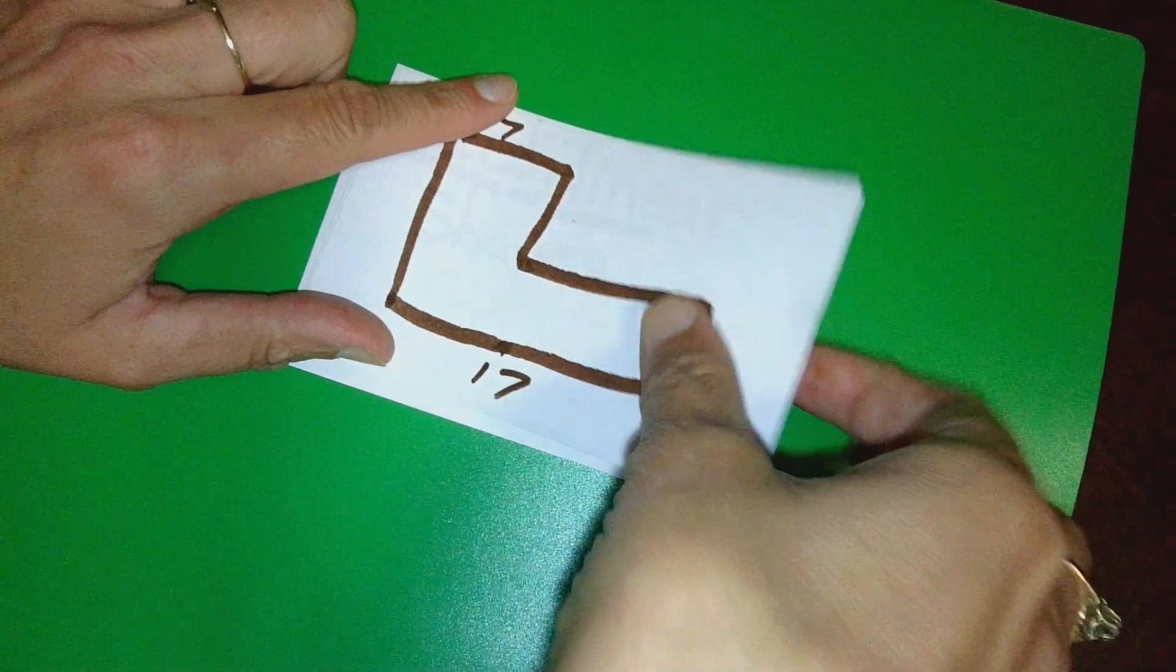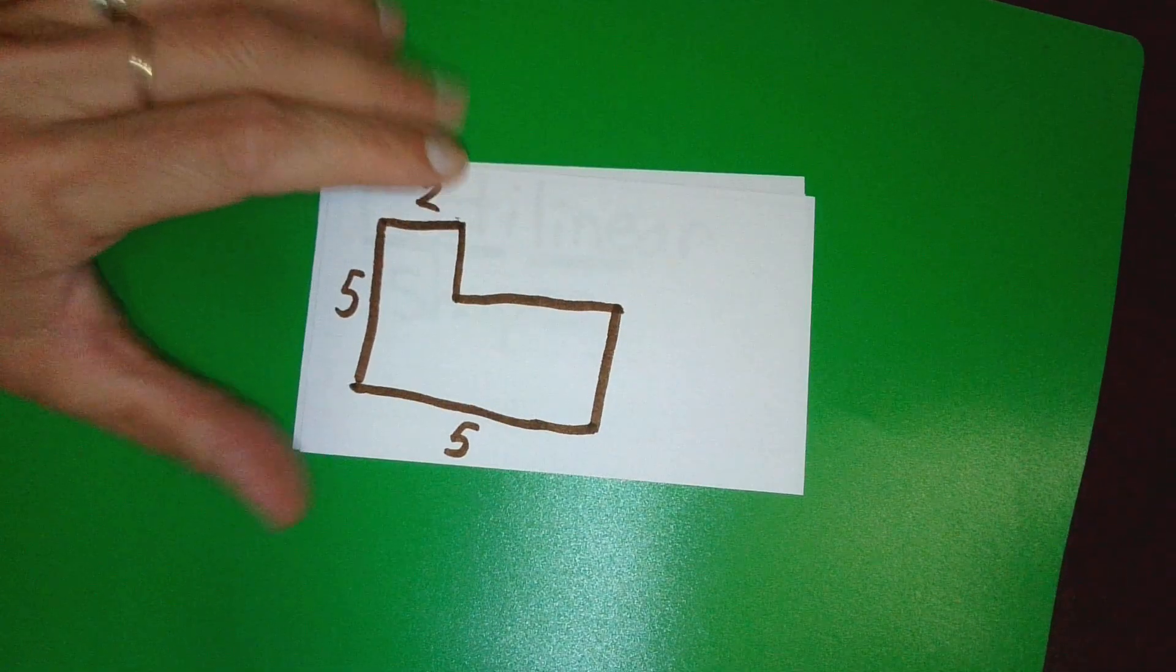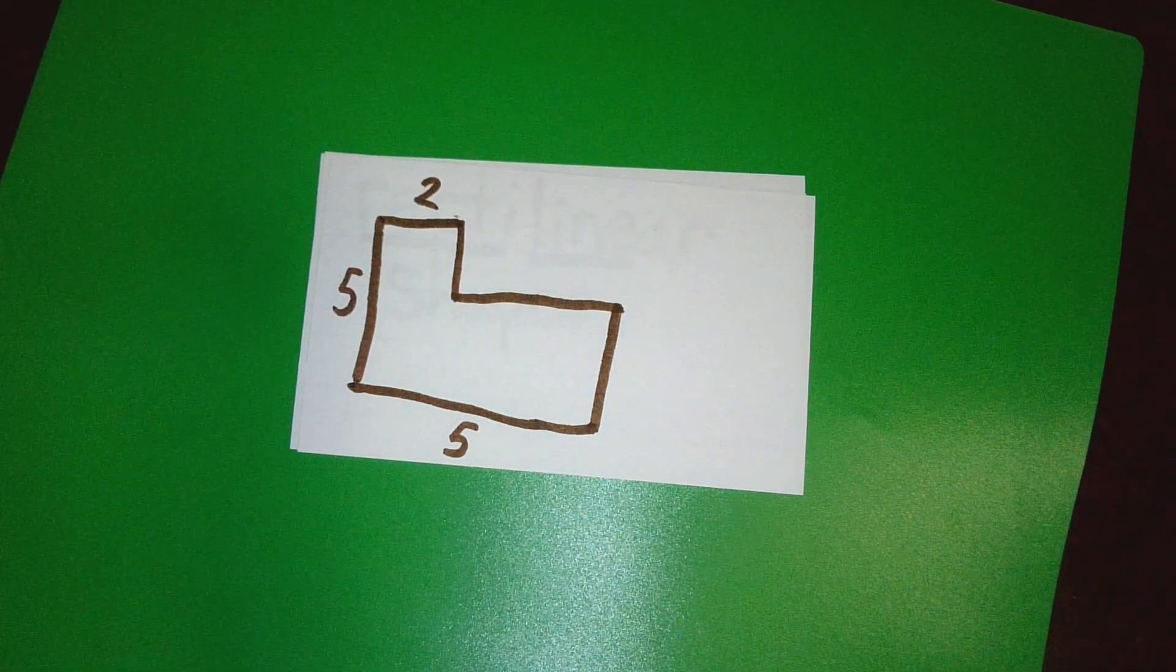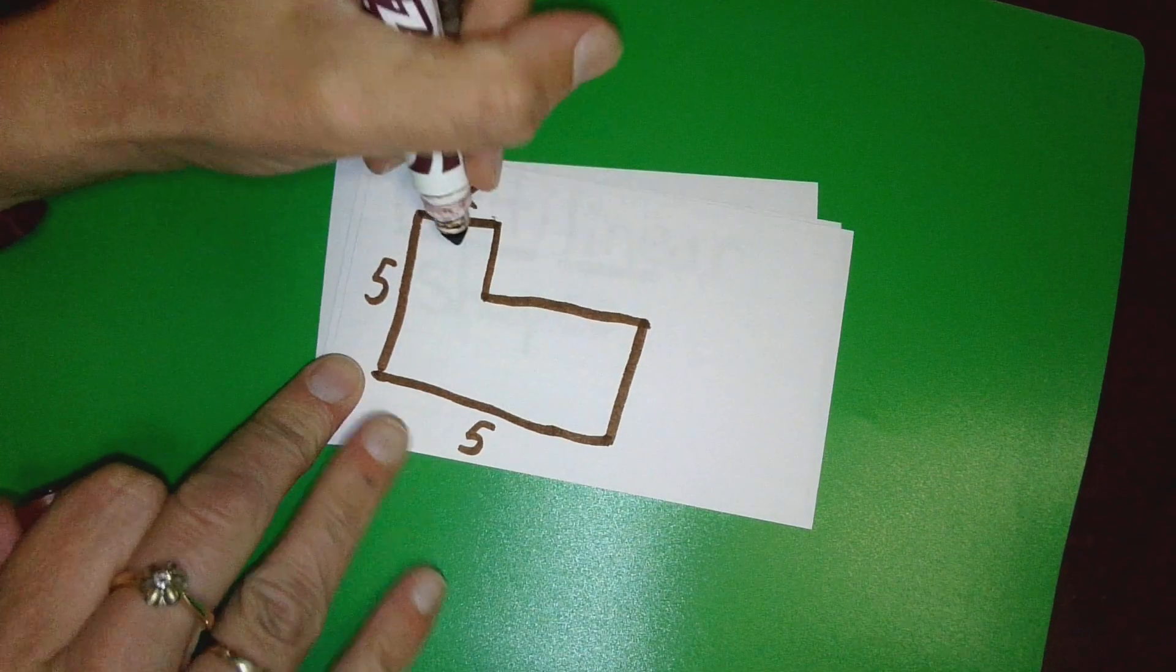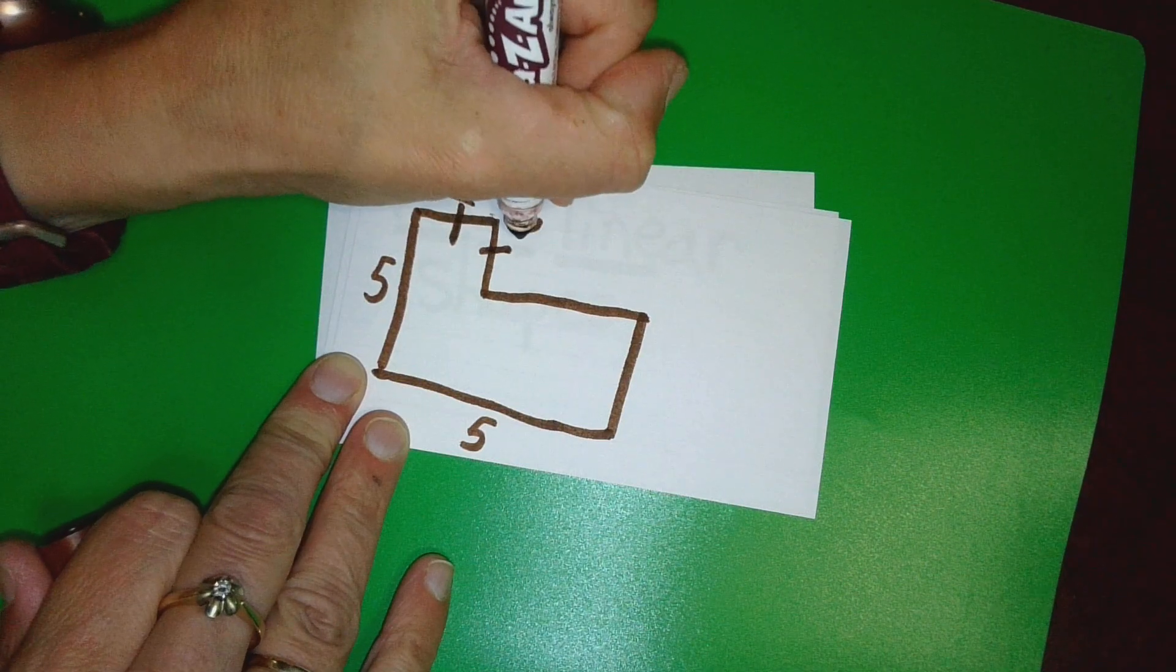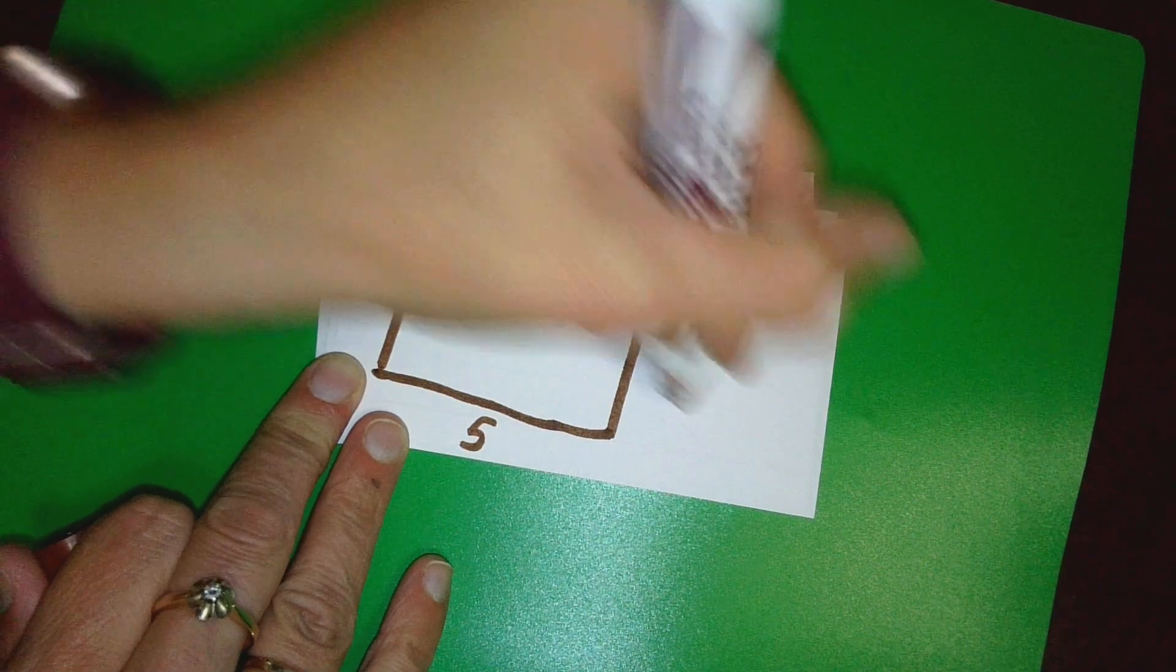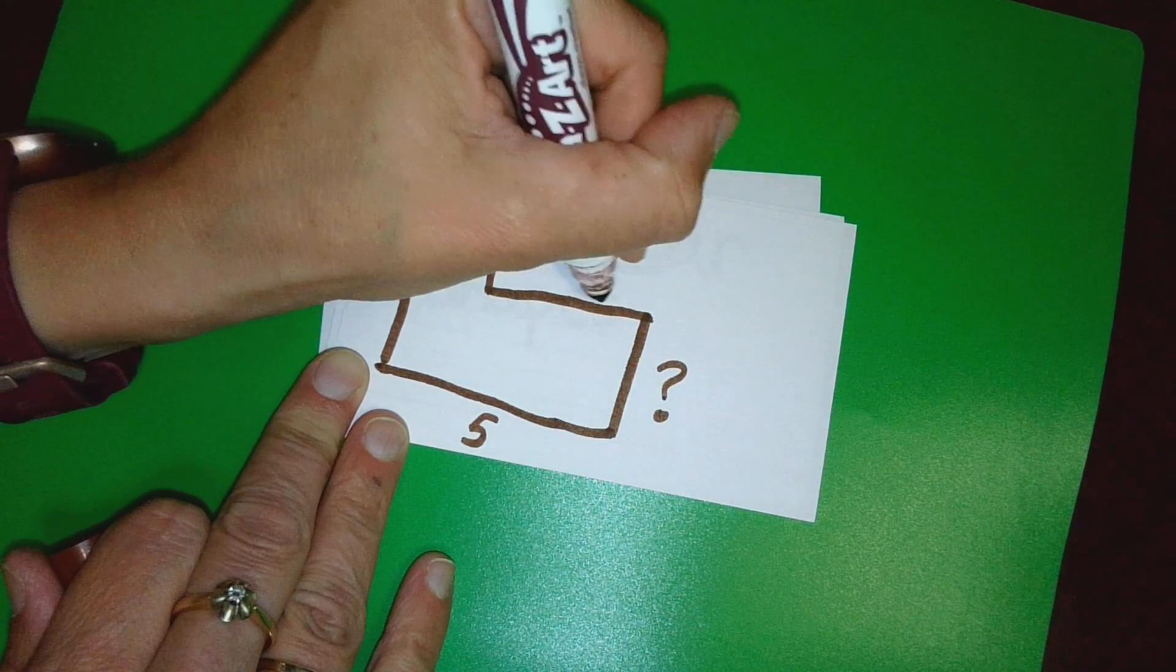So this one here is not the one that we just did. This is a different problem where you're trying to solve for a different number. A lot of times we see rectilinear figure problems in a book, on a worksheet, in a math test. You'll see something like this where it'll show you some of the numbers. It'll show you that the top is 2, this side is 2, this side is 5, and then they'll want you to solve for here and here.